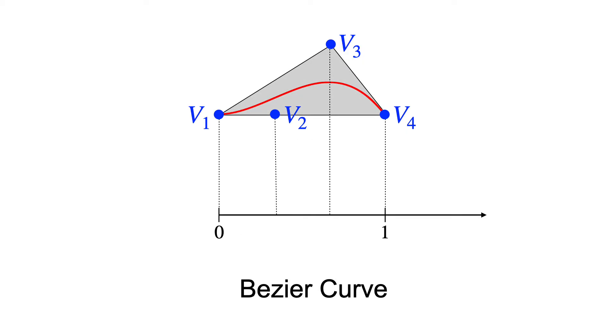For example, the curve is contained in the convex hull of the control points. This gives a bound on its shape.